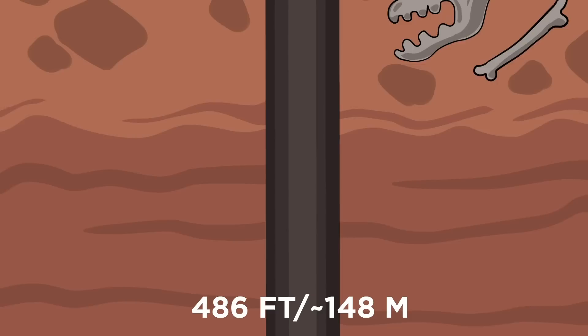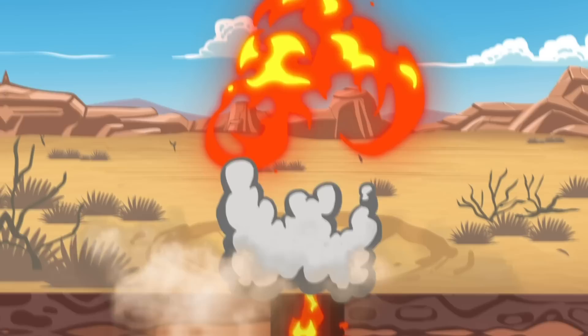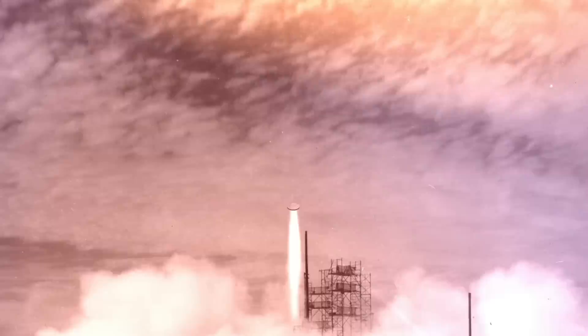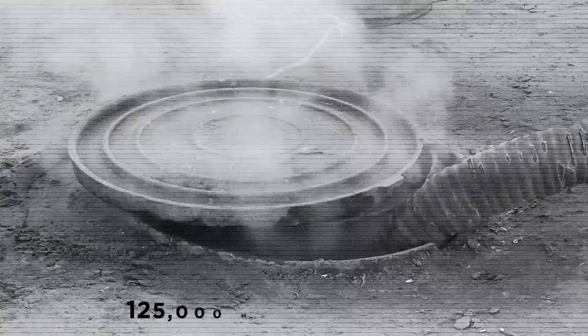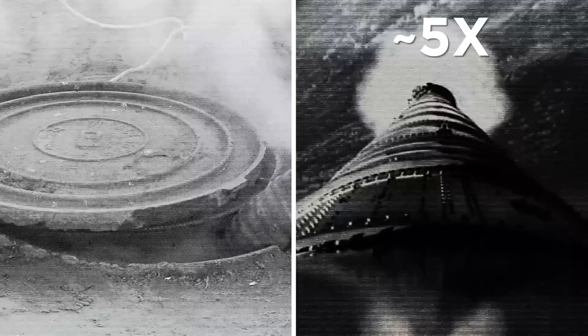In the ensuing explosion, the cap was blasted off the torrent of fire at an unthinkable speed. Brownlee was so impressed that he decided to repeat the test, renamed Pascal B, so he could record the speed of the cap using a camera that shot at one frame per millisecond. Although the recording remains classified, Brownlee estimated that the cover was launched at a speed of 125,000 miles per hour, which is about five times the escape velocity an object needs to leave Earth's atmosphere.